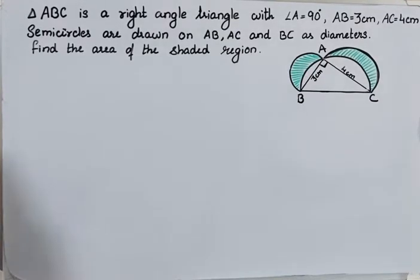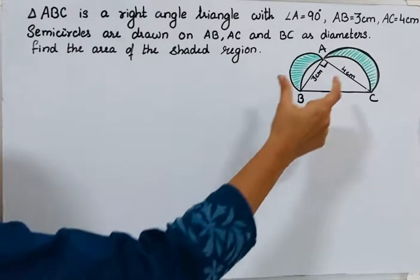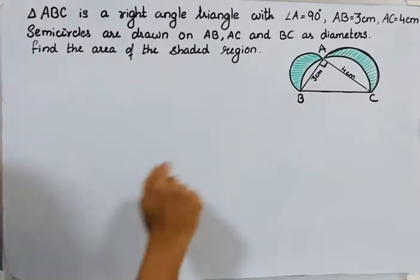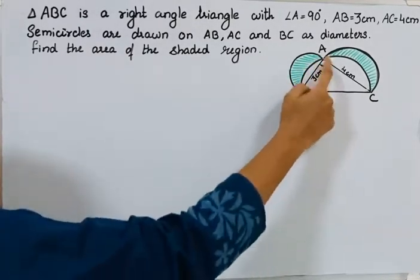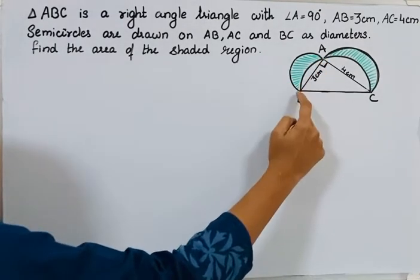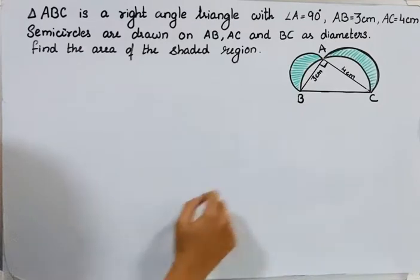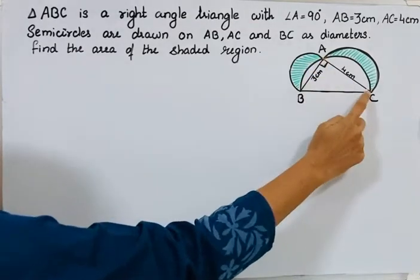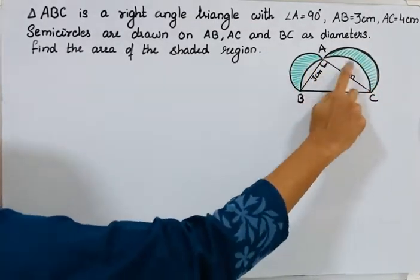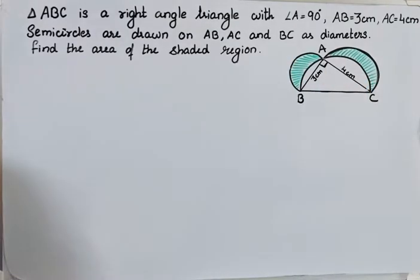This is area of shaded regions. How to find the area of this shaded part? Given that ABC is a right-angled triangle, right-angled at A, and the measurement of AB is 3 cm, AC is 4 cm. It is given that with AB as diameter, a semicircle is drawn; with AC as diameter, a semicircle is drawn; and with BC as diameter, another semicircle is drawn. Now, we have to find the area of this shaded part.